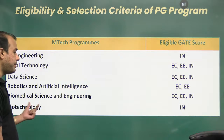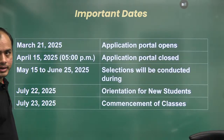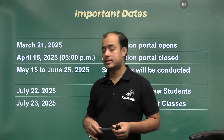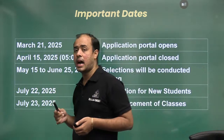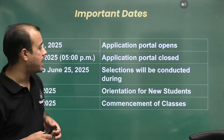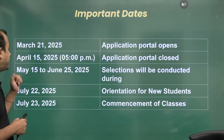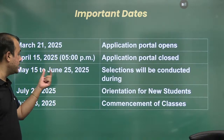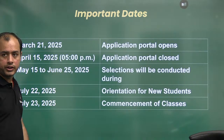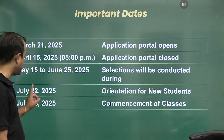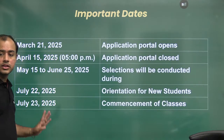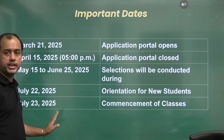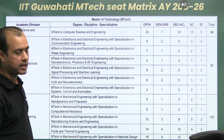The starting date of applications was 21st of March and applications closed on 15th of April. Selections will be conducted during 15th of May to 25th of June. Classes will start on July 23rd, with orientation on July 22nd.